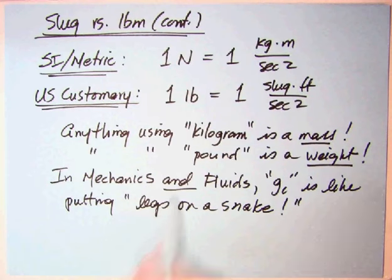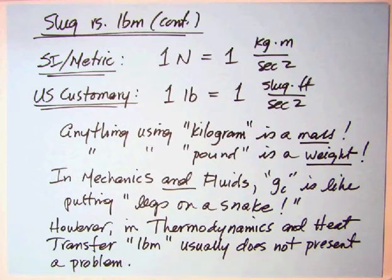So, I say in mechanics and fluids, G sub C is like putting legs on a snake. You just don't need it floating through the problem. And if you don't remember it, you will be off, as I said, by a factor of 32.2. And if you are, then you're not off by 32.2, you're off by 32.2 squared, or 900 times. So a big mistake. However, as I say here in thermodynamics and heat transfer, which the author and I do agree on, pound mass usually does not present a problem. You don't even really see G sub C, because all the steam tables are in pound mass. Somebody might someday do that, but no one has. And the units in heat transfer are as well. So, you have BTUs per pound mass and that kind of thing. So, it usually isn't a problem. But in mechanics and fluids, it certainly does, especially mechanics. Just my take on this controversy slug versus pound mass.